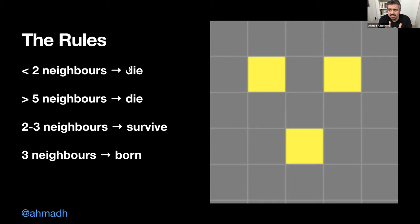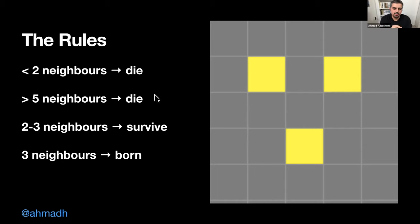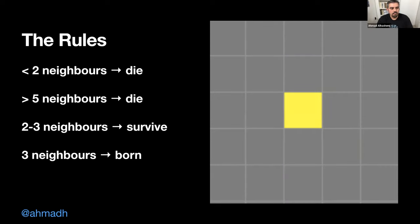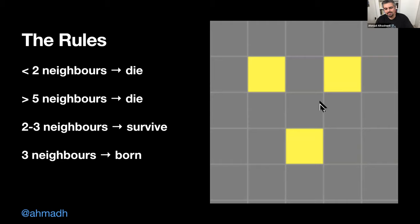You can look at the rules and tell yourself you know exactly what's going to happen, because at a cell level it's very easy. The things that can happen are: a live cell becomes dead, a dead cell becomes alive, or a cell stays in its state. There's no movement, no gravity, no energy — a cell is either dead or alive.